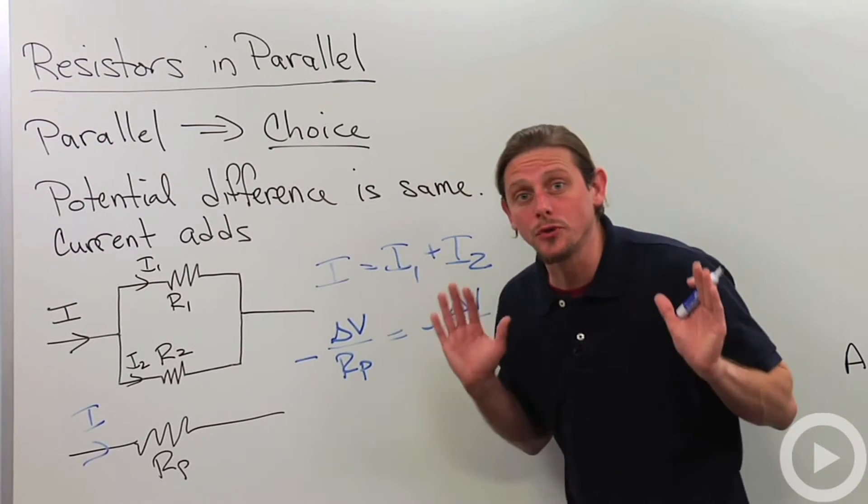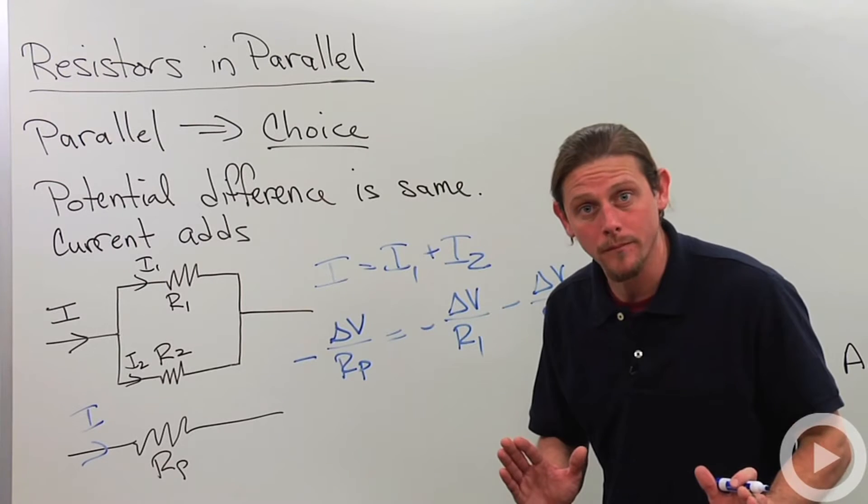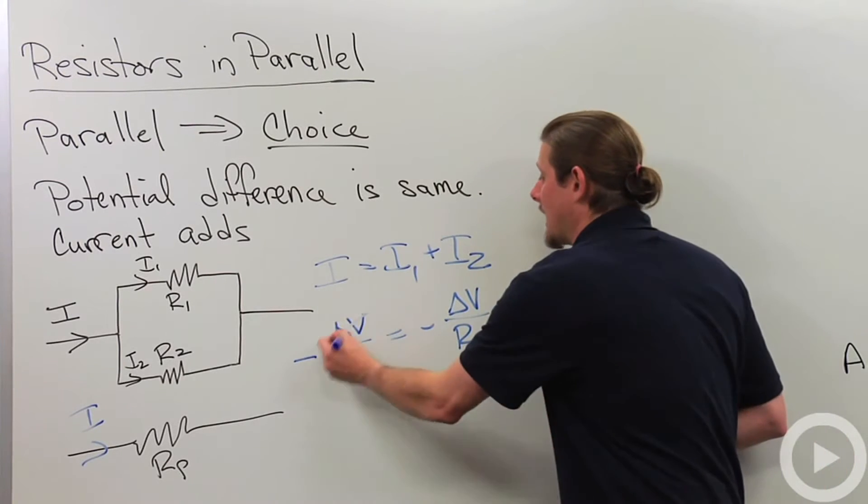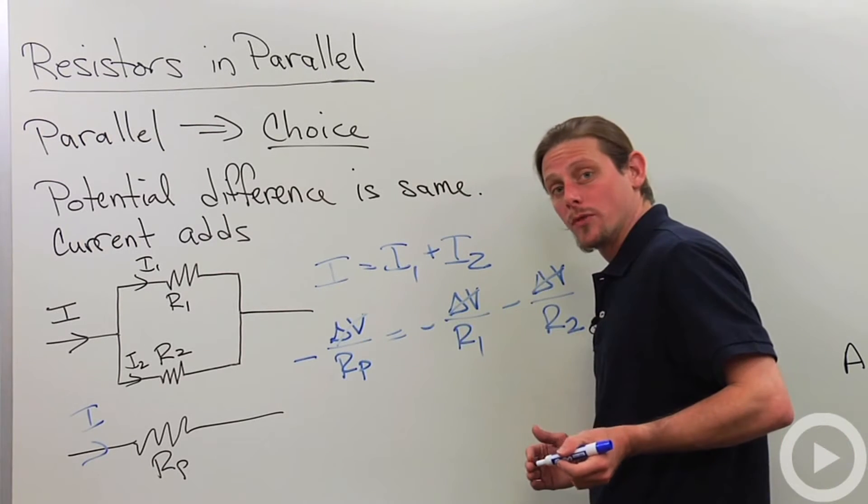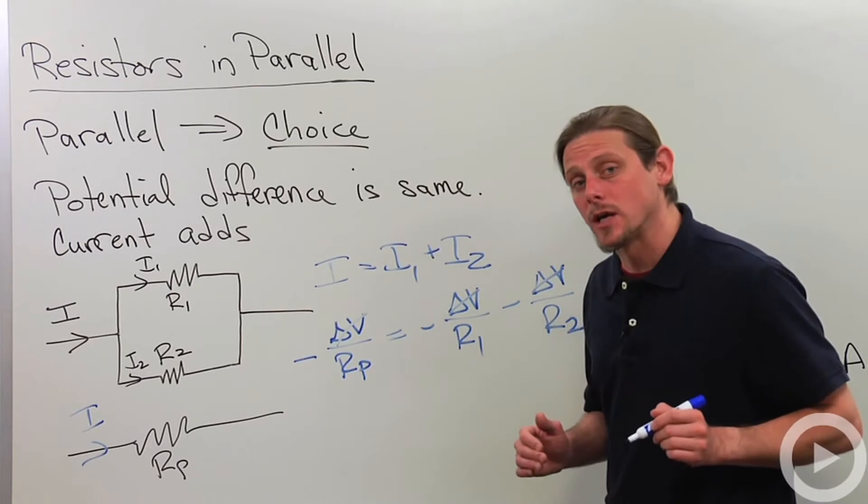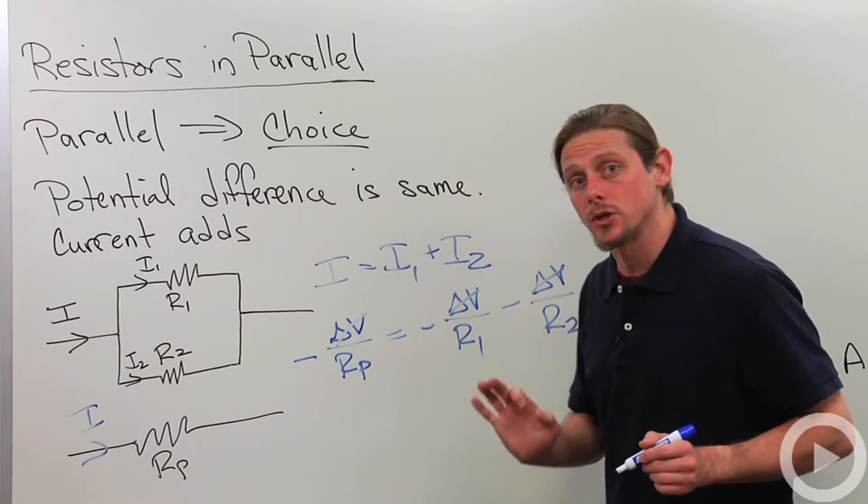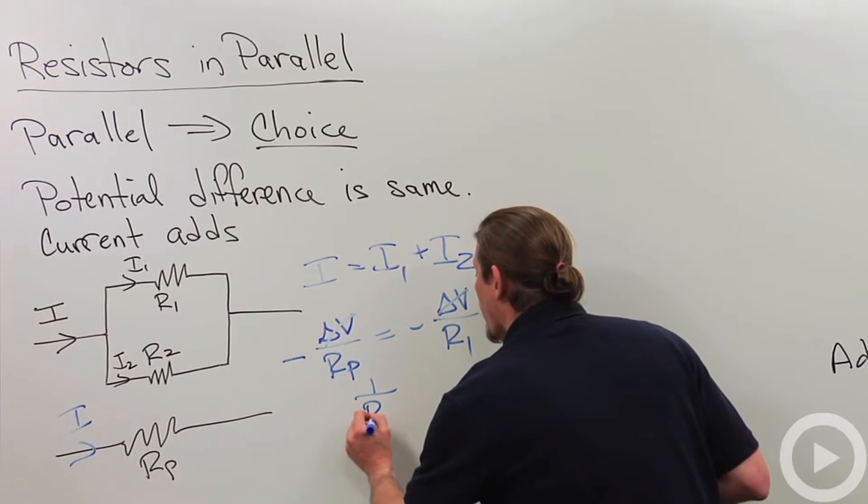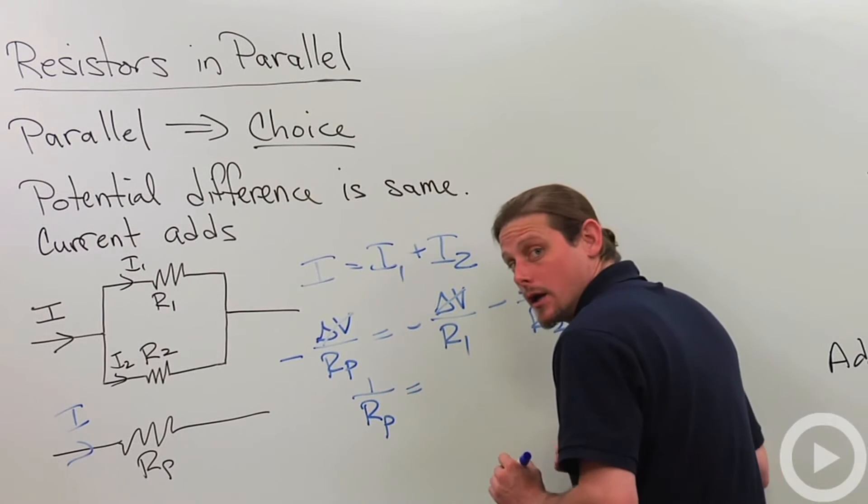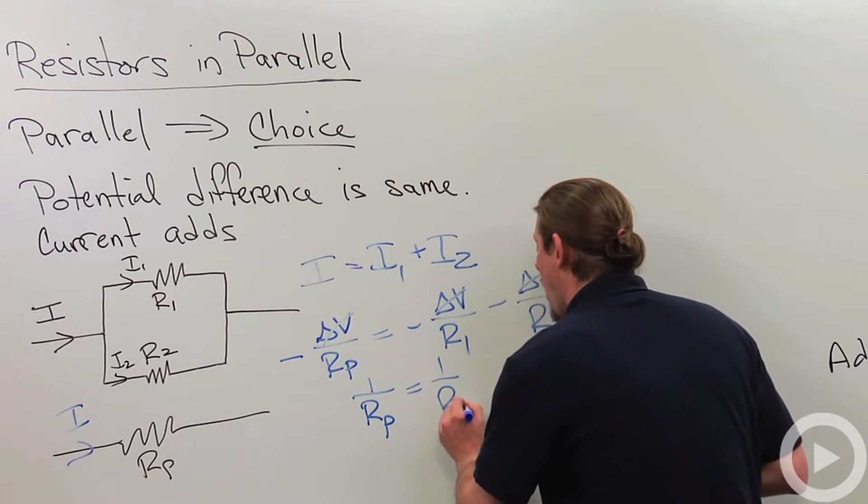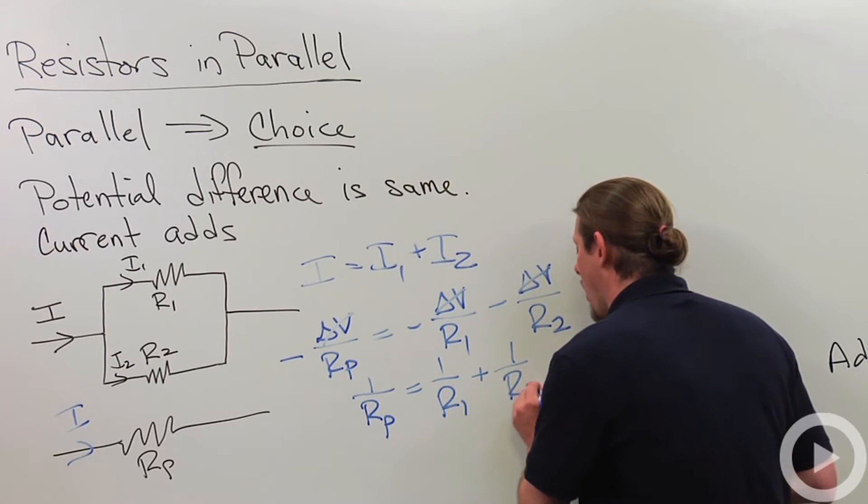Now the potential difference is the same. So that means that that's going to cancel out along with the minus sign. And that gives us a formula for adding resistors in parallel. 1 over R parallel equals 1 over R1 plus 1 over R2.